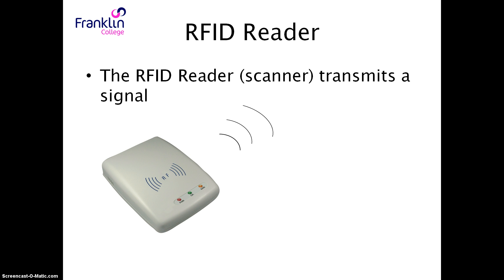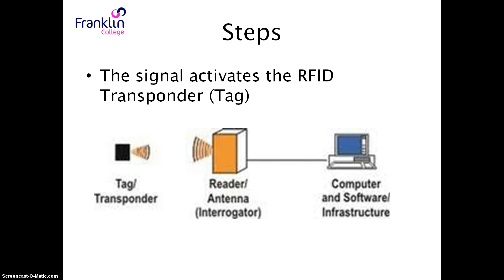You have an RFID reader — this is a scanner and the reader transmits a signal. The signal activates the RFID transponder. On this diagram you've got a reader, which is plugged into a computer or device and may have some kind of software. The reader is always sending out a signal, always sending out radio waves. As soon as a tag or transponder comes within range, the radio waves power the tag and cause a current to occur.